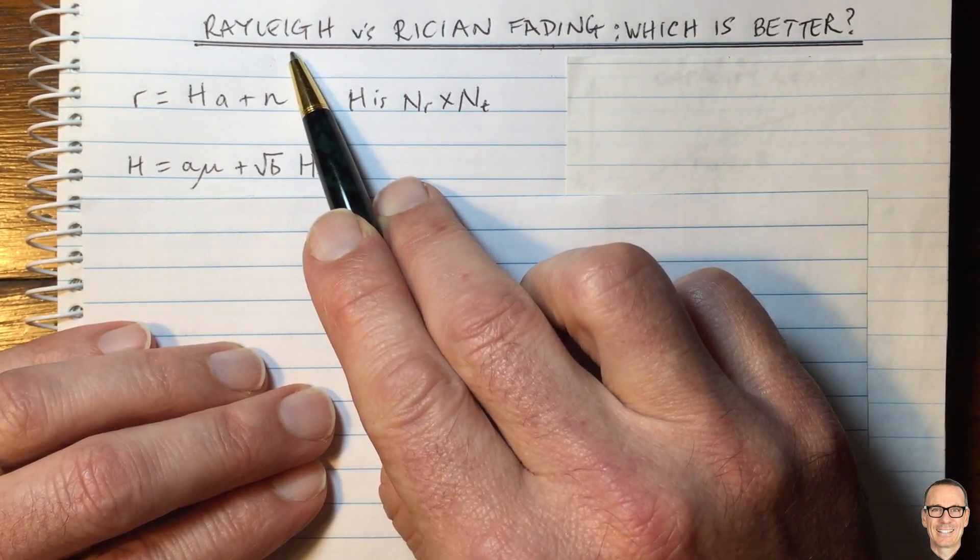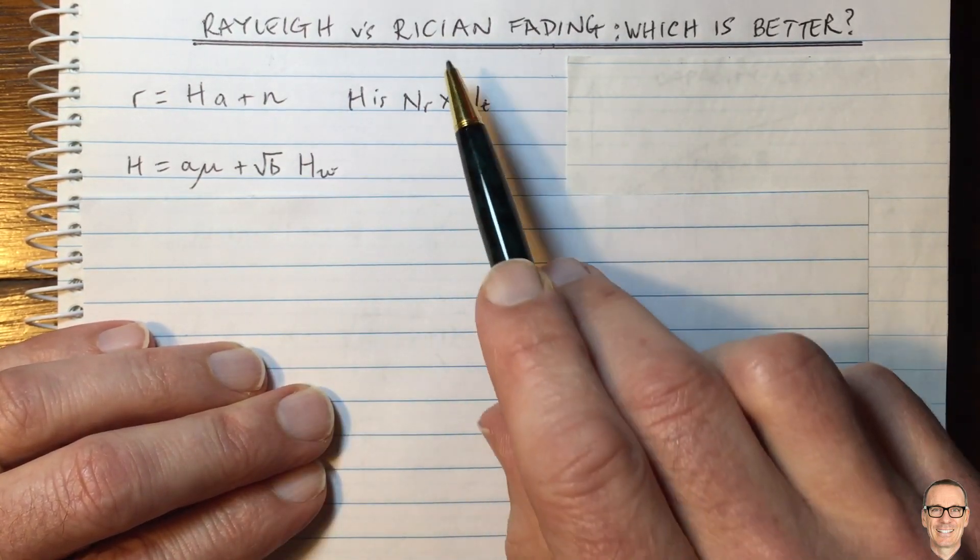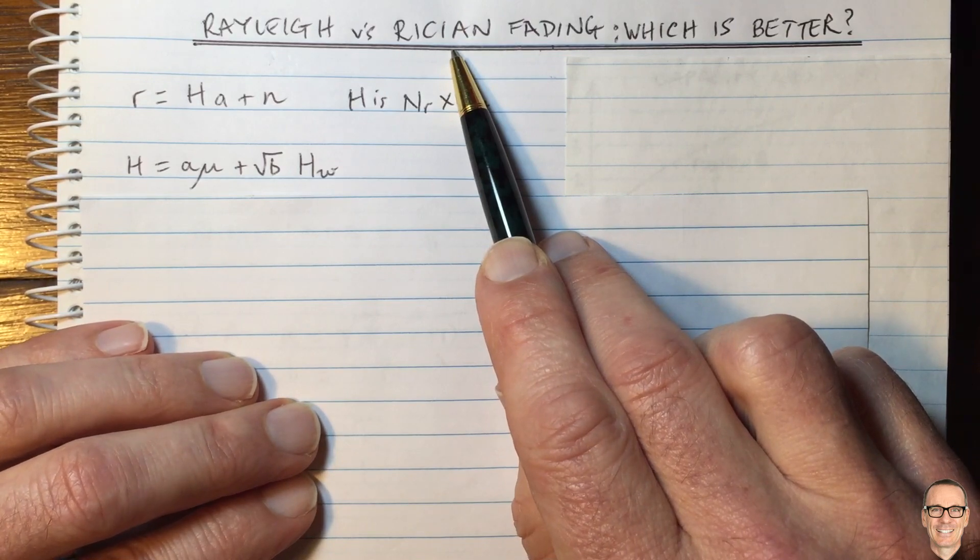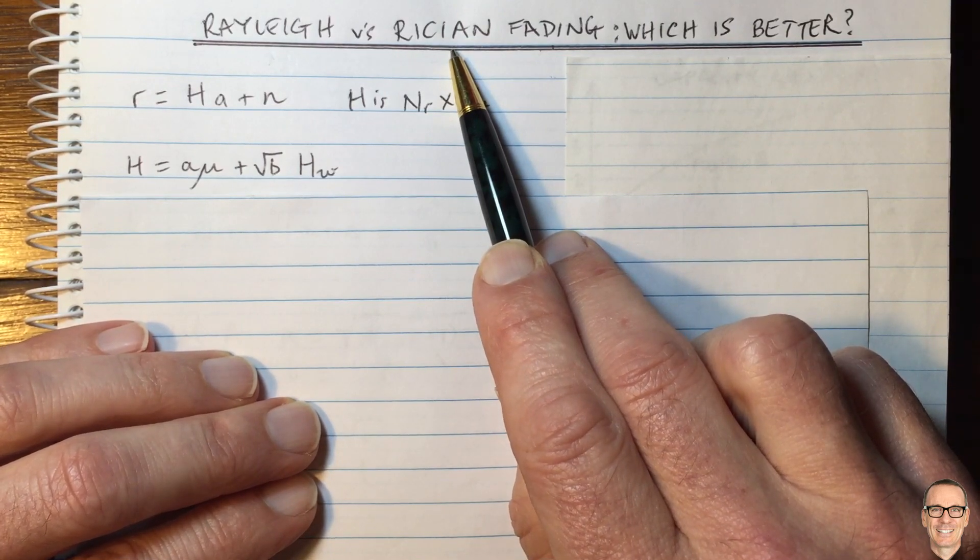So Rayleigh fading is when there's lots of multi-path, and Rician fading is when there is a dominant path plus the multi-path.